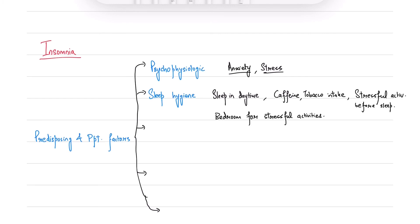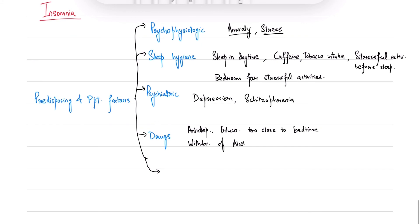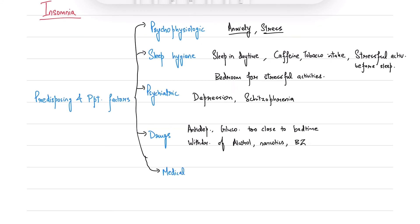The bedroom becomes associated with stressful feelings, which also hinders sleep. Psychiatric conditions like depression and schizophrenia are also associated with insomnia. Use of antidepressants, glucocorticoids too close to bedtime, or withdrawal of sedating drugs like alcohol, narcotics, or benzodiazepines can also cause insomnia. Medical conditions like asthma, COPD, cystic fibrosis, and heart failure are involved with a lot of pain and thus cause insomnia.